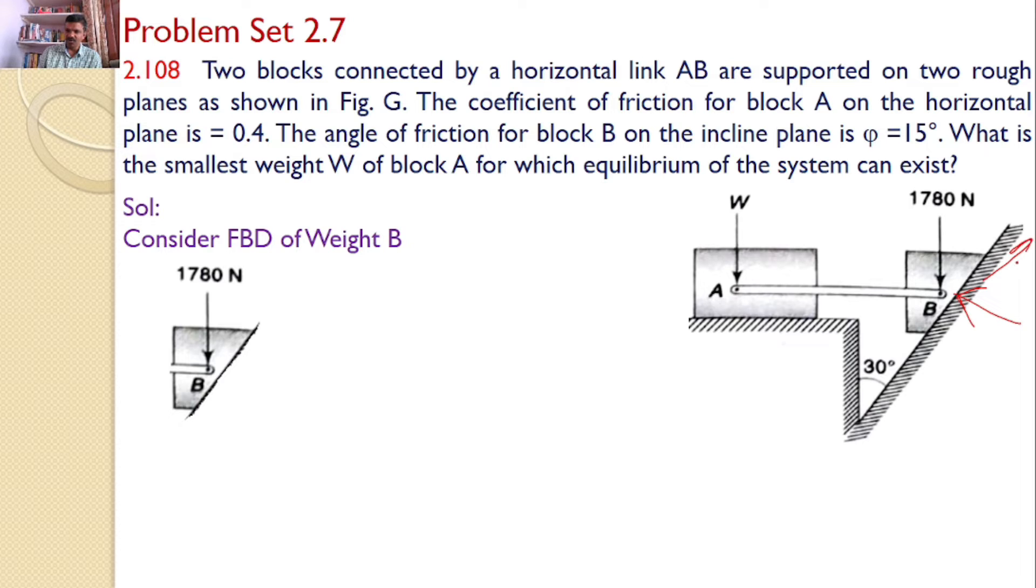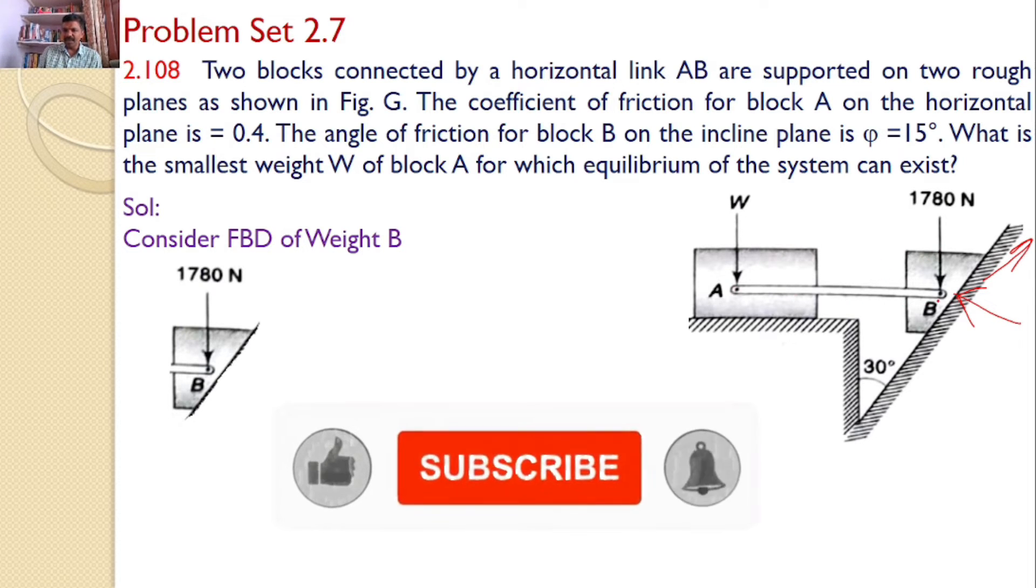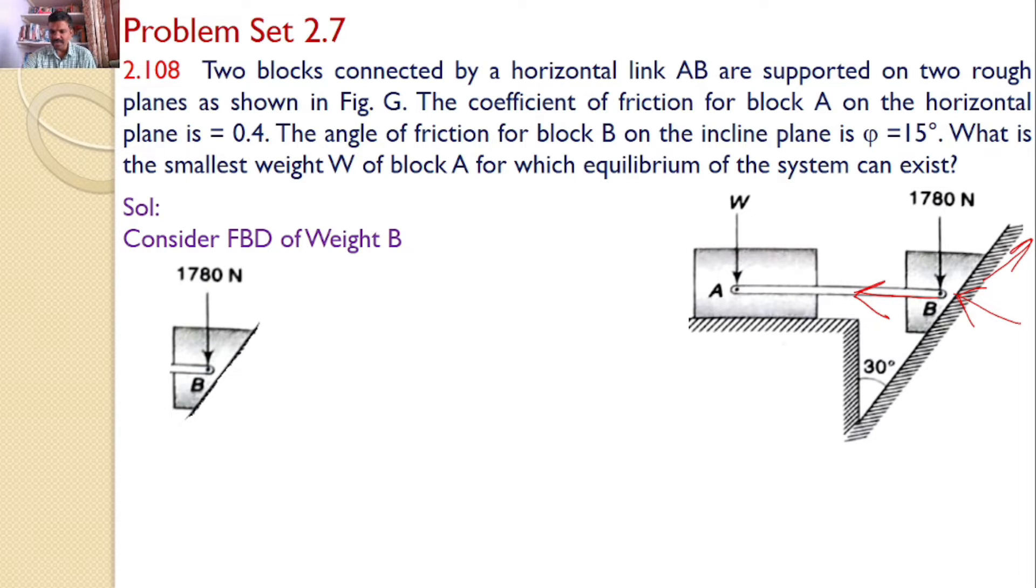Since there is a possibility that block B will try to slide in the downward direction, hence there is a friction force that may act in the upward direction. And if there is a prismatic bar AB connected, the tension in the prismatic bar may be away from the block B. Let us assume the normal reaction is NB. And the frictional force is equal to mu into NB. Tensile force in the prismatic bar AB is, let us say, T.